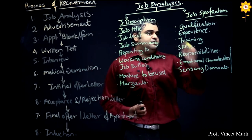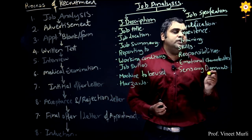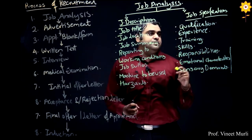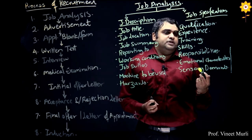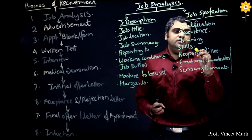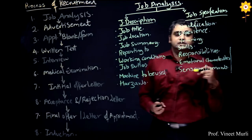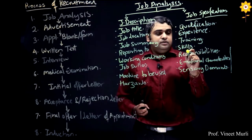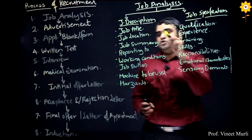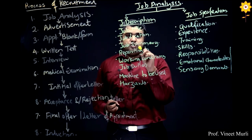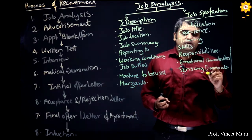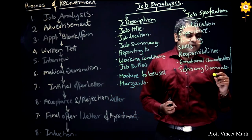Job specification will change from candidate to candidate depending on the job. First is the qualification. Next comes experience — this point will not be considered if the candidate is a fresher. Then there is training: if a person is lacking in certain skills, they will be given the required training. In job description it was job summary; here in job specification you have job responsibility — the candidate will be assigned different responsibilities along with some authority to function in the job.